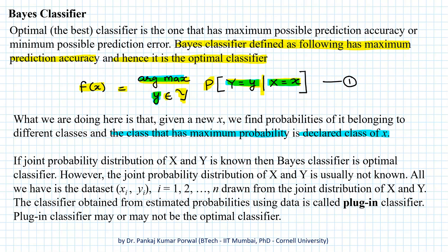There is a catch: the base classifier will be an optimal classifier only if the joint probability distribution of X and Y is known. However, the joint probability distribution of X and Y is usually not known, because all we have is a dataset consisting of n pairs (xi, yi) drawn from that joint distribution. So what we do is obtain the classifier from estimated probabilities using the dataset, and this classifier is called the plug-in classifier, which may or may not be the optimal classifier.